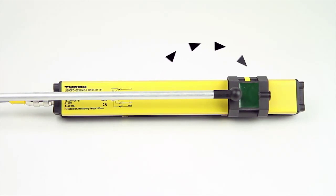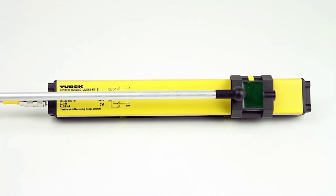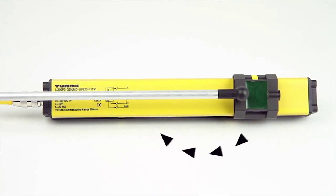First, the emitter coils are excited with a high-frequency AC field, which in turn charges the position element. The position element then resonates the charge into the receiver coils of the sensor.